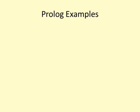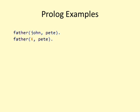Here are some examples in Prolog. To represent that John is the father of Pete, you write father(John, Pete). To ask who is the father of Pete, you write father(X, Pete), and Prolog answers X = John.